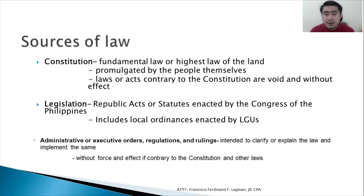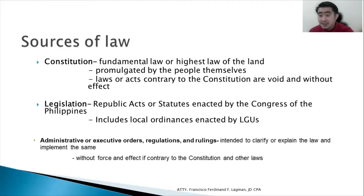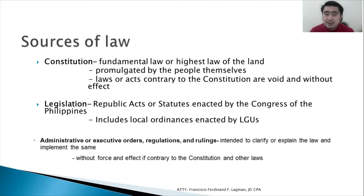The Constitution is very broad. Congress cannot make laws that are contrary to or against the Constitution. The Constitution prevails. But why does Congress still make additional laws if we already have a Constitution? Because the Constitution is very broad and Congress has to fill in the gaps. For example, in 1987 there was no internet yet, so Congress has to pass other specific laws — provided those laws are not against the Constitution.